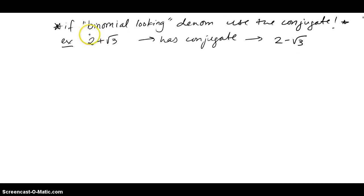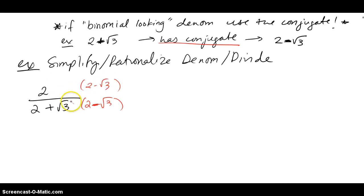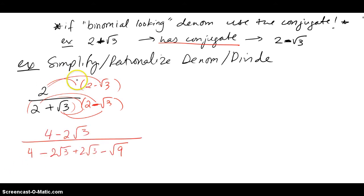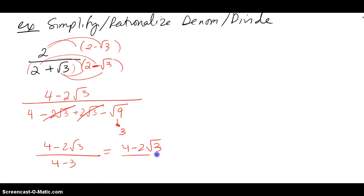If the denominator looks like a binomial, we use the conjugate. For example, 2 plus √3 has a conjugate of 2 minus √3. Since I have two terms in the denominator, I multiply top and bottom by the conjugate. Distributing gives 4 minus 2√3 in the numerator. In the denominator, the middle terms cancel, and √3 squared pops out a 3, leaving 4 minus 3, which is 1. So the answer is 4 minus 2√3 over 1.